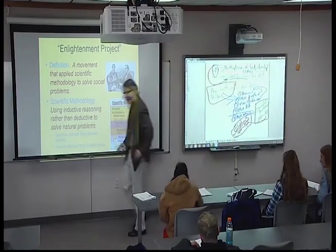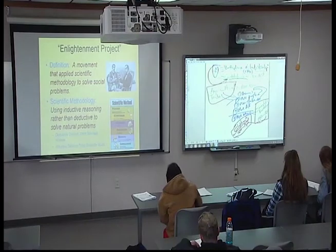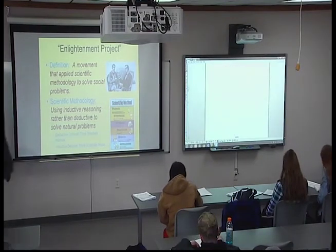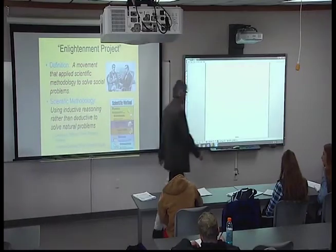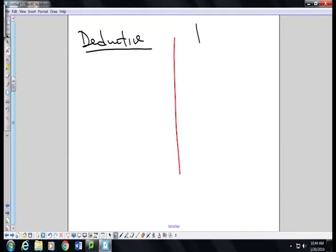Here, we have a problem, and I'm not spending a lot of time on this because we have other things to discuss. But you've got to understand two different types of reasoning. I don't think I've talked about it in this class yet, but this is the essence of the scientific revolution — a shift from deductive to inductive reasoning.